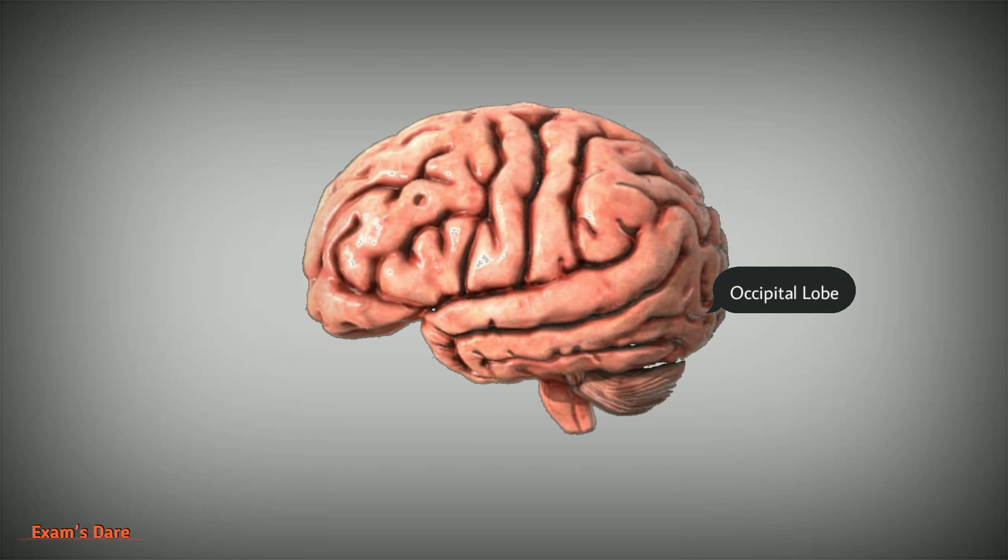It receives input from the eyes and controls vision. It is also called visual cortex. Temporal lobe is the left and right lateral portion of the cerebrum. It is responsible for hearing and perception of smell. It is also called auditory cortex.